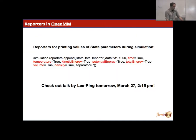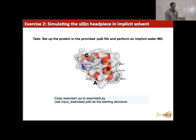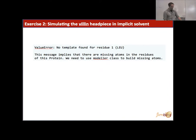Reporters give you an idea about what's happening in each time step, for instance, the kinetic energy, potential energies, densities, the temperature, but more on this also by Li Ping tomorrow afternoon. So let's move on to exercise two, where we simulate a villin headpiece in implicit solvent. So to do this, copy exercise1.py to exercise2.py, and use the PDB file input_exercise2 as a starting structure for this. And if you're doing everything right, you should get an error message that says that residue one was not found. And this is because there are missing atoms in this protein. And when there are missing hydrogens, for instance, then we can use the modeler class to put those onto our residue.